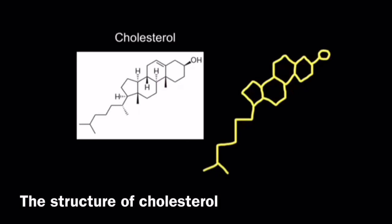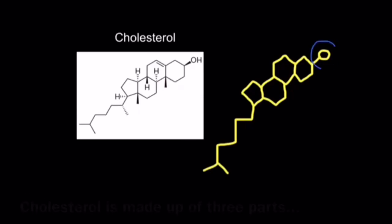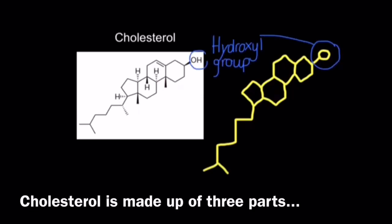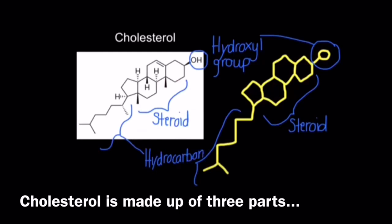On the left hand side you can see the structure of cholesterol and on the right hand side I've drawn a simplified diagram of it. So it's made up of three parts: at the top you have the hydroxyl group, in the middle you have the steroid portion, and at the end you have the hydrocarbon chain.